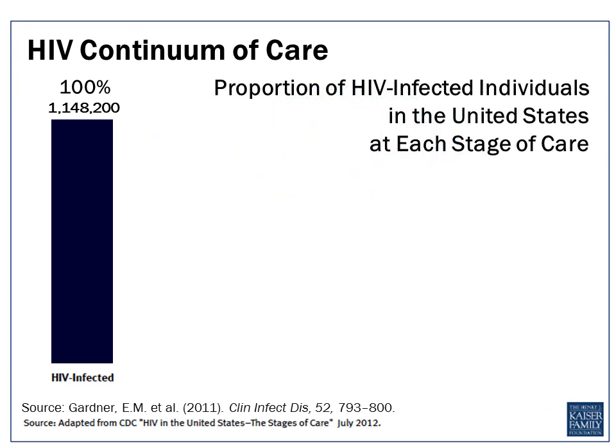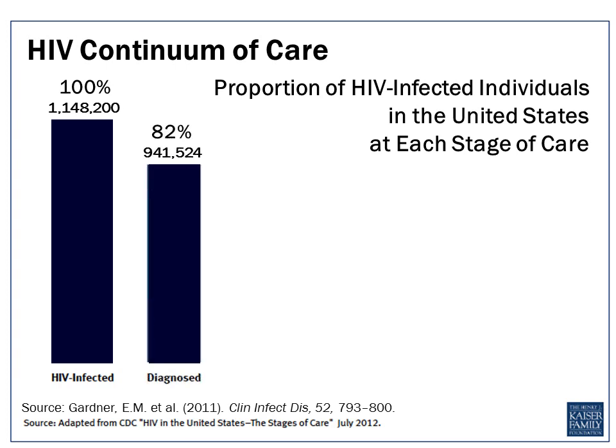One of the epidemiological concepts that's very important is demonstrated in the first drop-off in the spectrum of care. This column shows that of the 1.2 million people estimated to be infected, only about 82 percent have been tested and diagnosed with HIV. This means that 18 percent of the people living with HIV do not know that they are infected. This is important from a personal health perspective because if you know you're infected, you are more likely to seek the services you need to get treatment and to improve your health. This is also important from a public health perspective because people who know they are infected are more likely to do things to prevent transmission to their sexual and drug using partners.